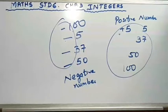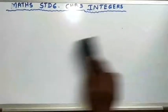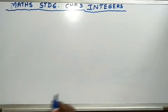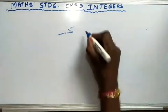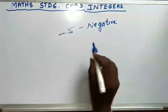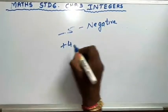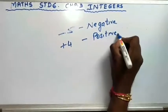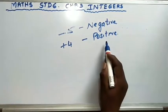Let us solve practice set 4. The question given is: classify the following numbers as positive or negative. The first number is minus 5 — minus 5 is a negative number, so you just have to write whether it is a negative number or a positive number. Second, it is given as plus 4 — it is a positive number. So if it is negative, write negative; if it is positive, write positive.